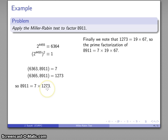If we want to, we can go a little bit farther. 1273 also factors—it's 19 times 67. So this number, 8911, is 7 times 19 times 67.